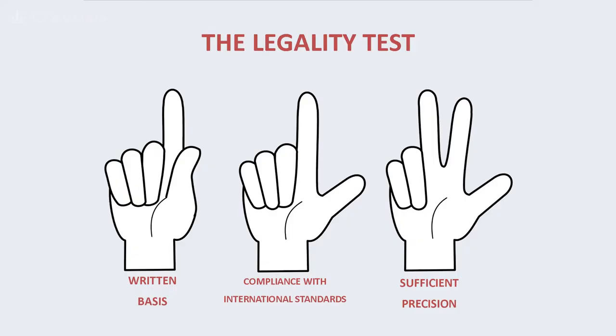In conclusion, this segment has highlighted the meaning of the legality test. We have shown that the legality test requires considering: one, whether the law has a written basis; two, whether it complies with international standards; and three, whether it is sufficiently precise to allow people to adapt their behaviors to the law. In the next segment, we will turn our attention to the second part of the test — the valid ground test.